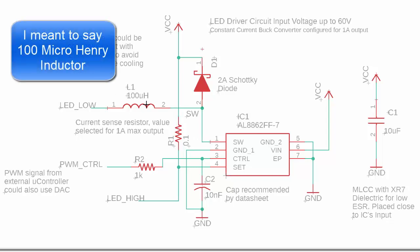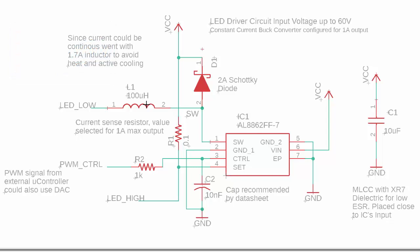For L1, I'm using a 100 microhenry inductor. The data sheet provides an equation to calculate the exact inductance, but they also provide a table recommending 100 microhenry for use at 1 amp at this voltage range. I chose a 1.7 amp rated inductor to reduce heating. In my first iteration I chose a 1.2 amp inductor, but found it heated up uncomfortably. Going with the higher amperage inductor trades off some cost and size for cooler operation — since I don't have space constraints and don't want active cooling, I was comfortable with that choice.